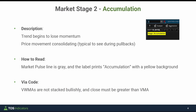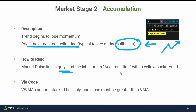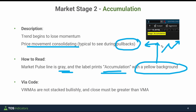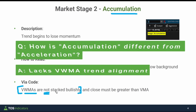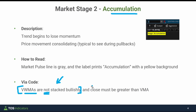We repeat this for accumulation. Accumulation is where price is consolidating and we're looking for pullbacks for a resumption of the acceleration trend. If the market pulse line is gray and we see accumulation, that tells you we're looking for some sort of build-up in price action — a nice consolidation period. Via code, for this condition to be true we need the variable moving averages to not be stacked bullishly. That's the big difference between accumulation versus acceleration. The second condition is sustained — we must still be above that 10-period variable moving average line.